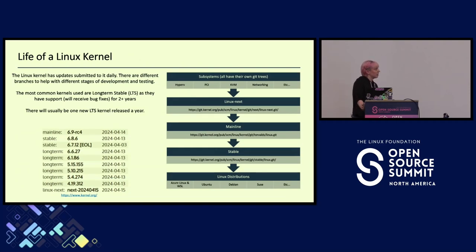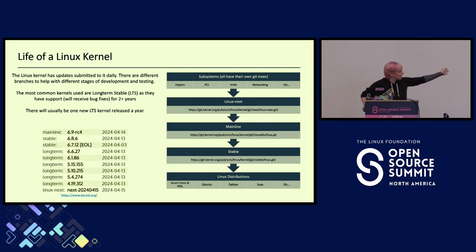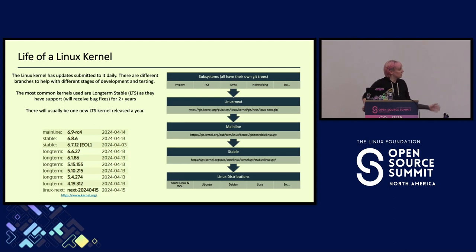A big part before contributing is understanding the development cycle of the Linux kernel. There is what is called the upstream kernel — I kind of refer to it as the one kernel to rule them all. In the middle of the diagram it shows mainline. This kernel is consistently being updated, with about a nine to ten week development cycle before releasing a new kernel, and that goes into stable. There are often several different stable versions with different life cycles, all coming from this one mainline source.